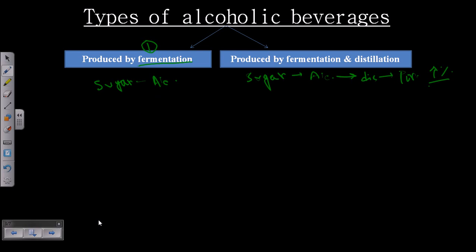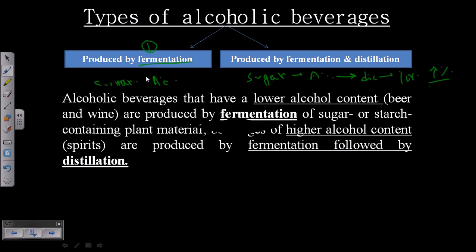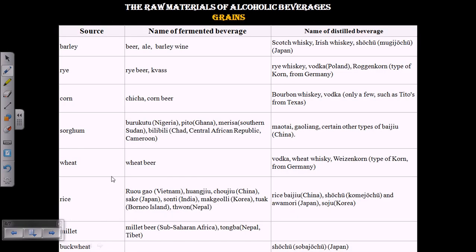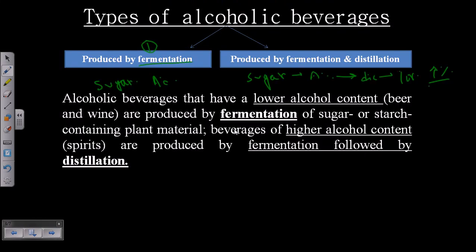Examples of products produced by fermentation only are beer and wine. Products made by both fermentation and distillation include whiskey, vodka, and similar things, which are called spirits and have a higher alcohol percentage. Alcoholic beverages with lower alcohol content, like beer and wine, are produced by fermentation only, while those with higher alcohol content like whiskey, vodka, and rum undergo fermentation followed by distillation to get a purer form of alcohol.